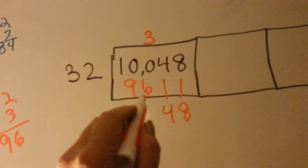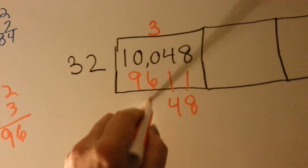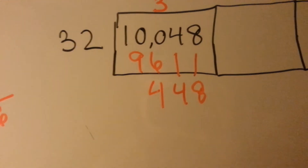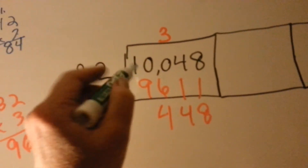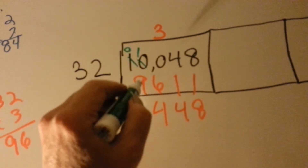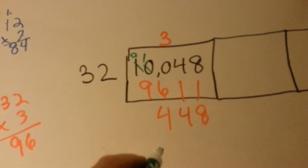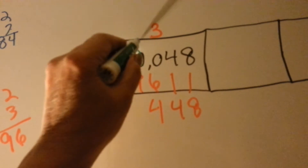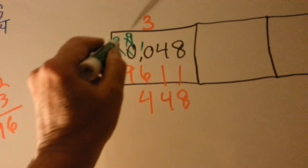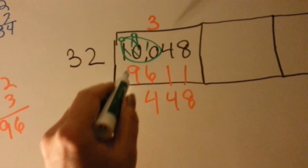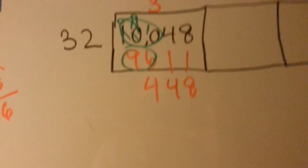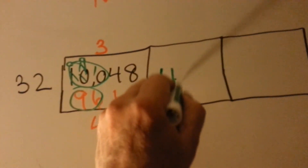And 100 take away 96 is 4. You can actually do that without having to do the borrowing. If you want to do the borrowing, you can — borrow from this and borrow from this, it becomes a 0, that becomes a 10. This one has to borrow from it so it becomes a 9 and now that one becomes a 1. Or you can just say 100 take away 96 is 4. So now we've got 448 and that's going to go into this box.